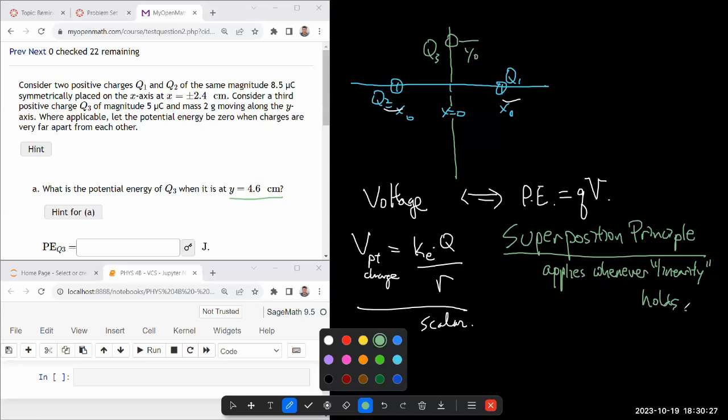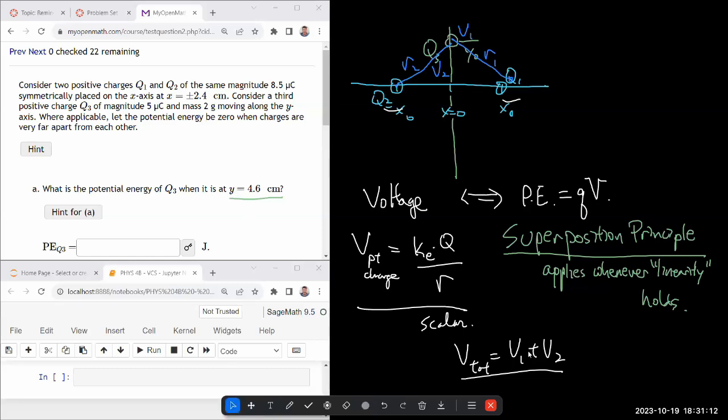That you might have heard mentioned in physics 4a, especially in the context of waves. And it's a principle that applies to much broader categories of things than waves. It applies whenever linearity is held. Your math class might have covered the idea of linearity before. It's the same mathematical concept of linearity, whenever linearity holds. So what this superposition principle lets me do is I can calculate what the voltage would have been due to this charge here. Voltage V1 based on this distance R1. I can calculate voltage V2 based on this distance R2.